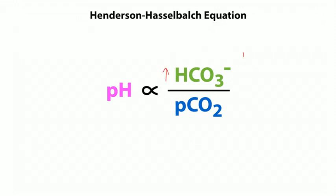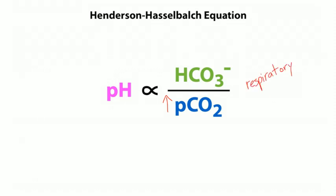Raising bicarb is a metabolic phenomenon — bicarb is primarily under kidney control. If bicarb rises, pH rises, giving metabolic alkalosis. If PCO2 is high, that's a respiratory phenomenon. Since pH is related to bicarb over PCO2, when PCO2 rises, pH decreases — that's respiratory acidosis. Conversely, if you hypoventilate and retain CO2, CO2 builds up in the blood and pH falls.